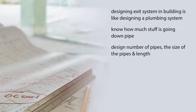Designing the exit system in a building is like designing a plumbing system. When designing a plumbing system, you need to know how much stuff is going down the pipe. Once you have this information, you can design the number of pipes, the size of pipes, and the length of the pipes.